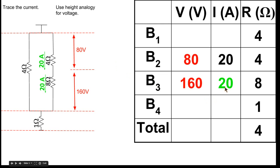Then since we know we've got 20 amps going through this 8 ohm resistor, 20 times 8 gives 160. So this voltage drop here is 160 volts.